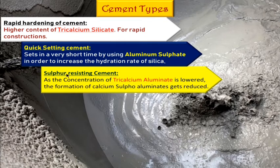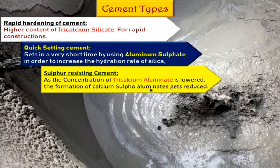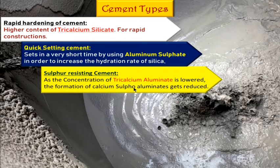Next, sulfur resisting cement. Here the concentration of tricalcium aluminate is kept lower, because tricalcium aluminate normally reacts with sulfur to form sulfur aluminate, which causes corrosion and ultimately collapses the building. This cement is used where there is high sulfur content — like underwater environments, sewage treatment plants, pipelines, and seashore tidal zone constructions.